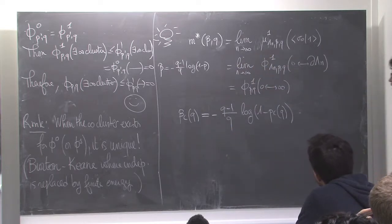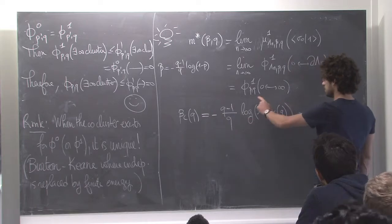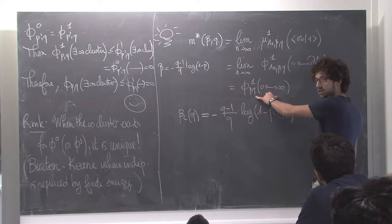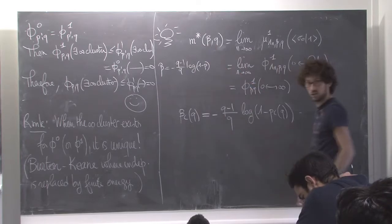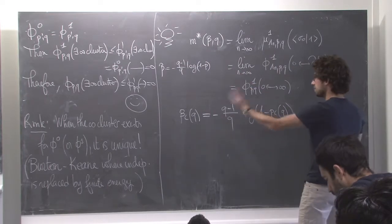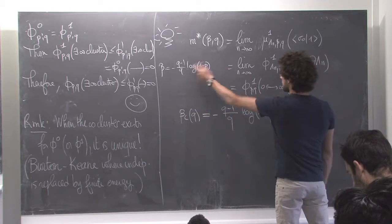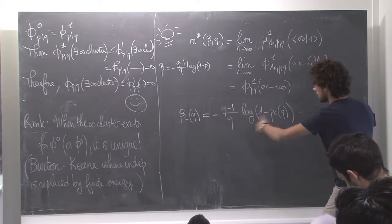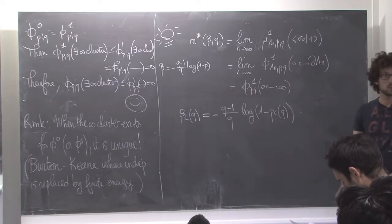So the conclusion is that beta_c(q) equals -((q-1)/q) log(1 - p_c(q)). If you take beta larger than this quantity, p is going to be larger than p_c(q) and the spontaneous magnetization is indeed non-zero. And if beta is smaller than beta_c, then p is smaller than p_c(q) and you get zero spontaneous magnetization.